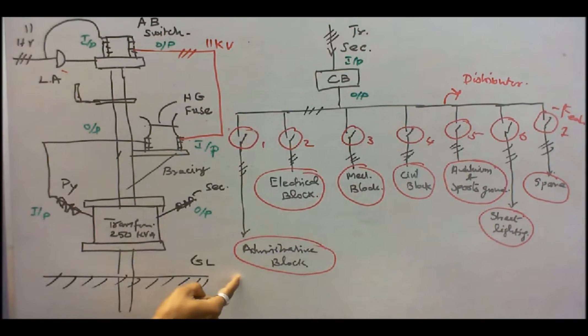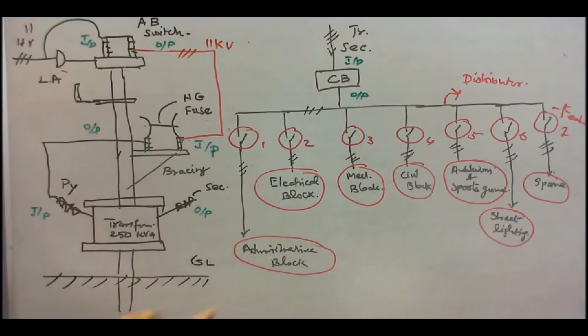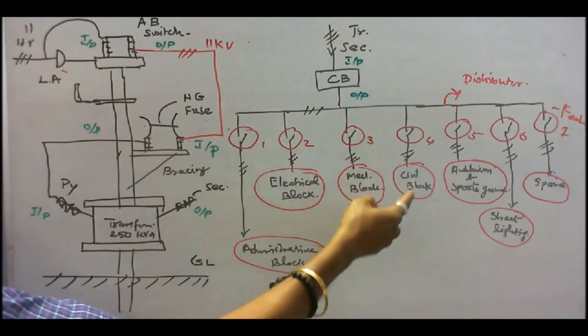Feeder 1 goes to the administrative block. Feeder 2 goes to the electrical block. Feeder 3 goes to the mechanical block. Feeder 4 goes to the civil block.